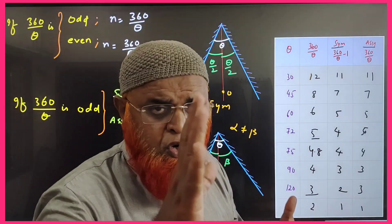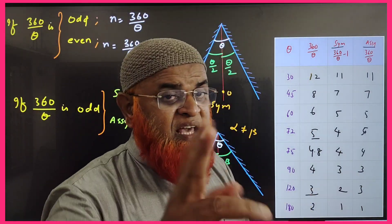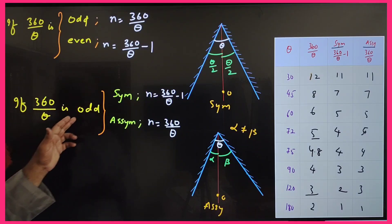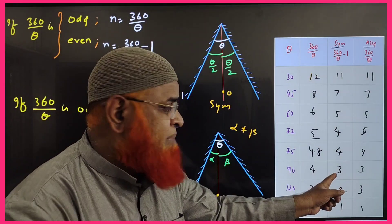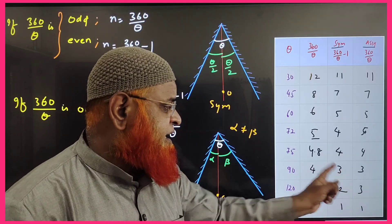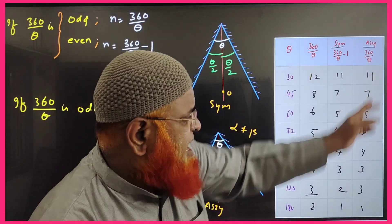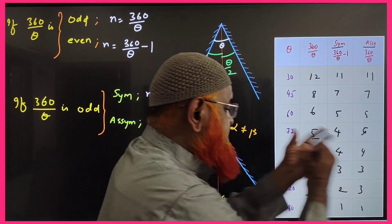If it is an odd number like 5 and 3, there are sub cases for that. What are the sub cases? If 360/theta is odd and asymmetry, means you have to write one number less—that means 4 you will be getting. If it's 5 you will be getting, means you write 4. And for symmetry, you have to write as it is 360 by theta directly.